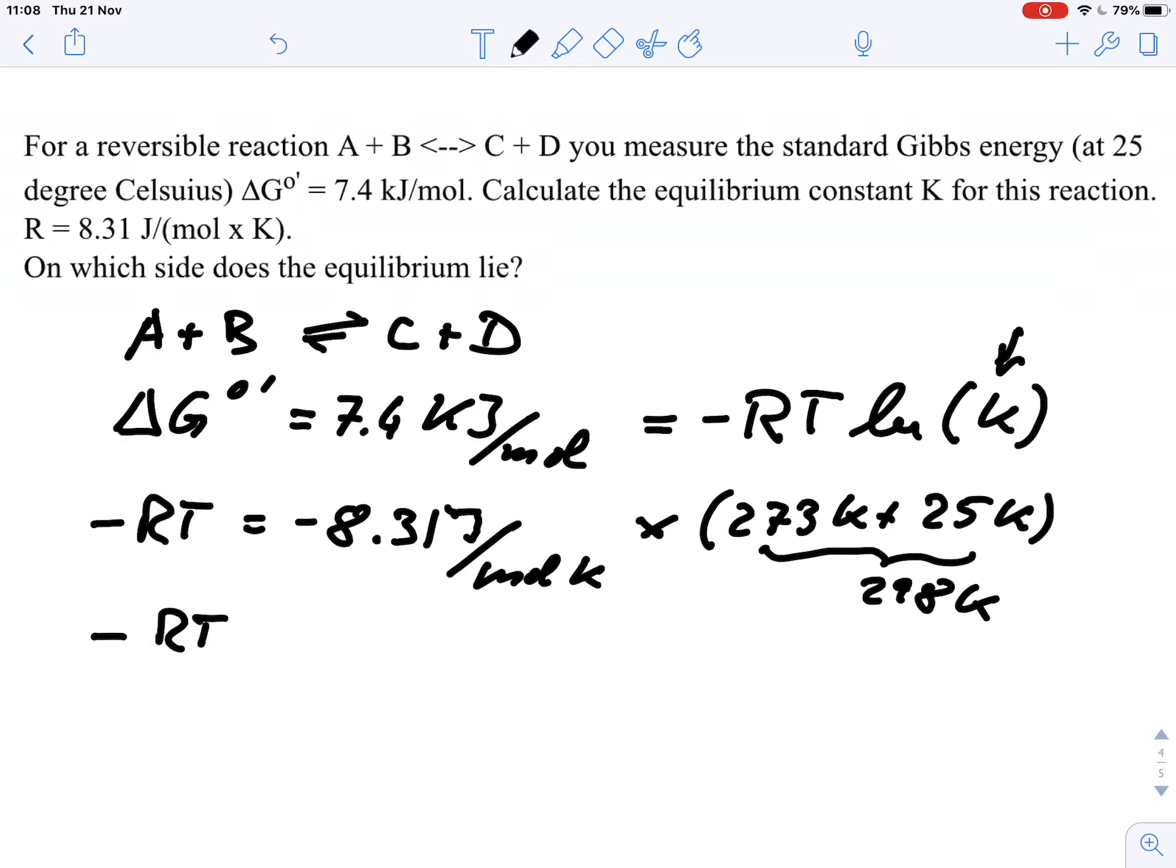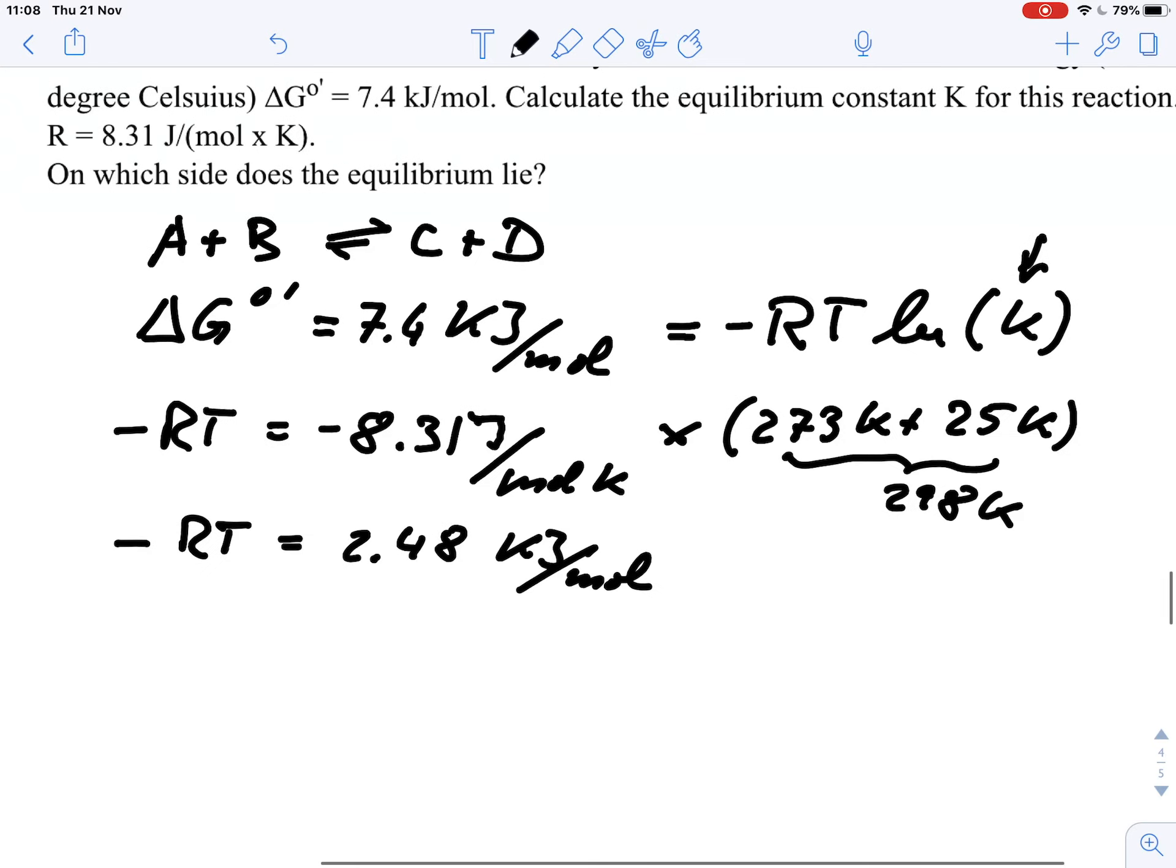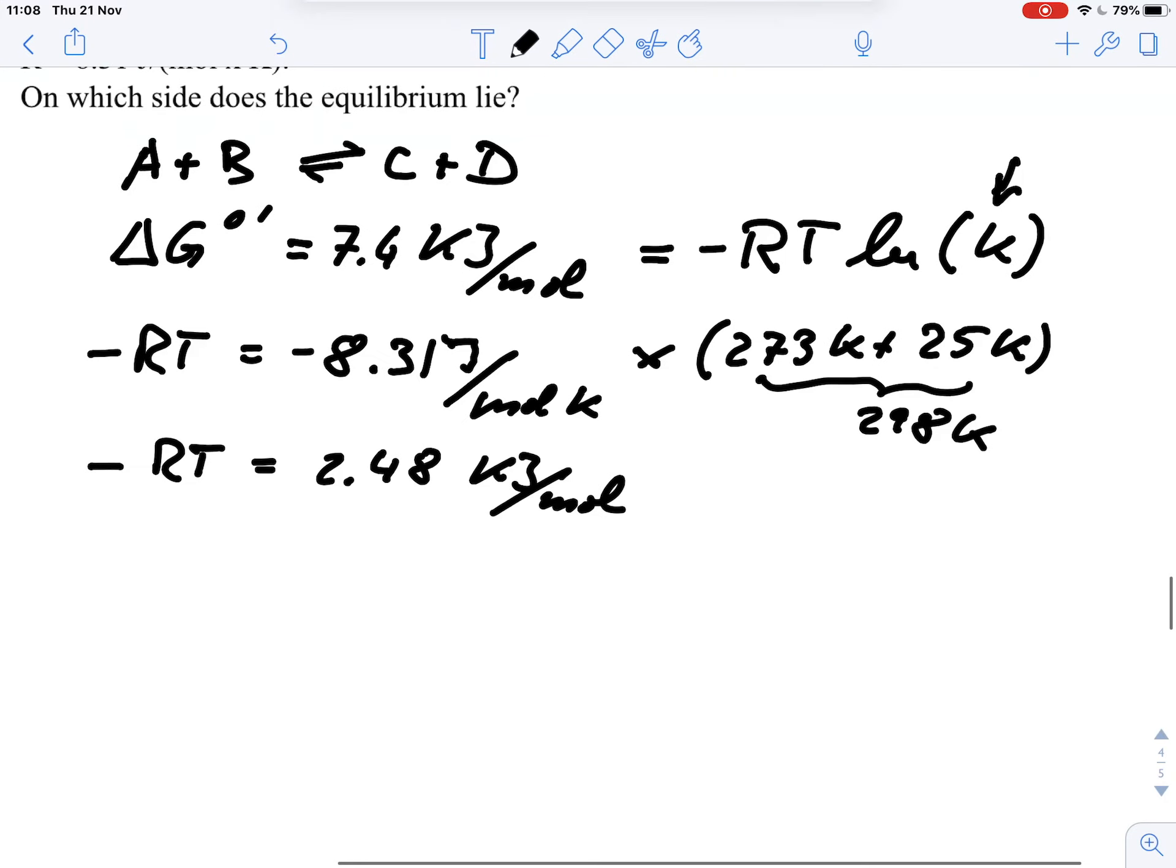And so our minus RT term becomes 2.48 kJ per mole.